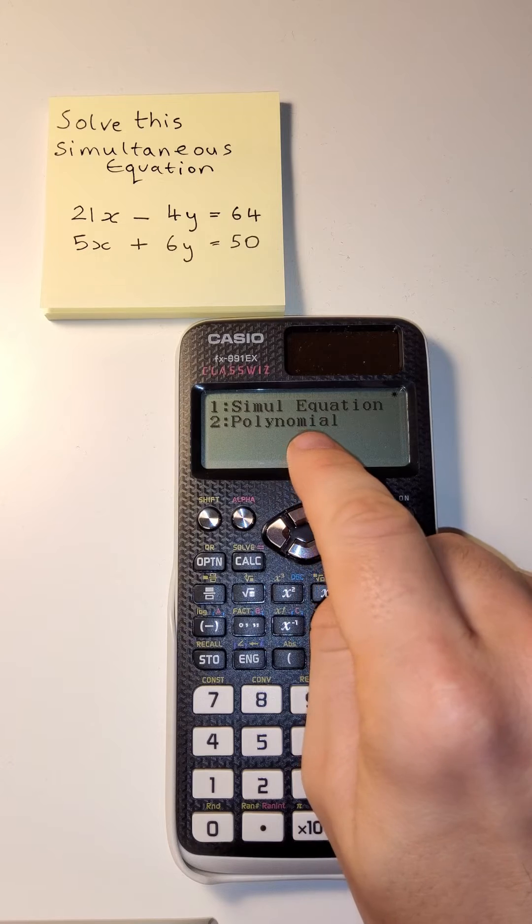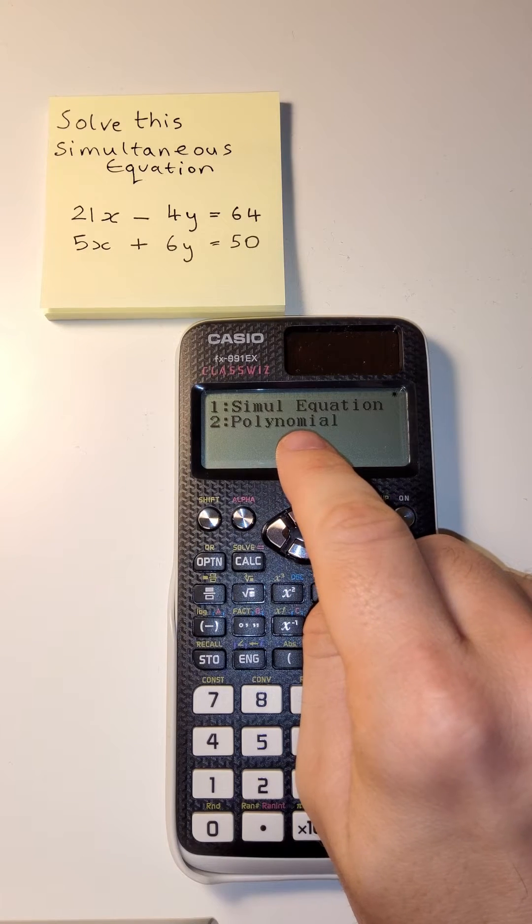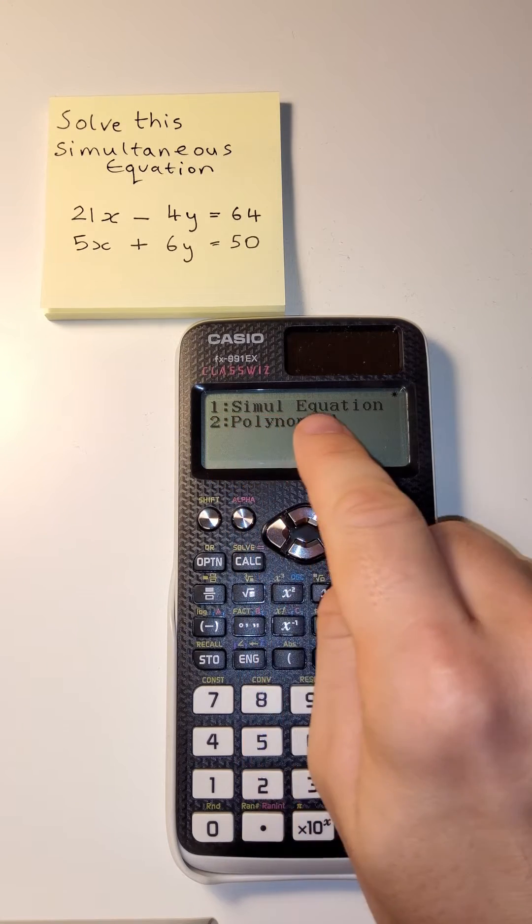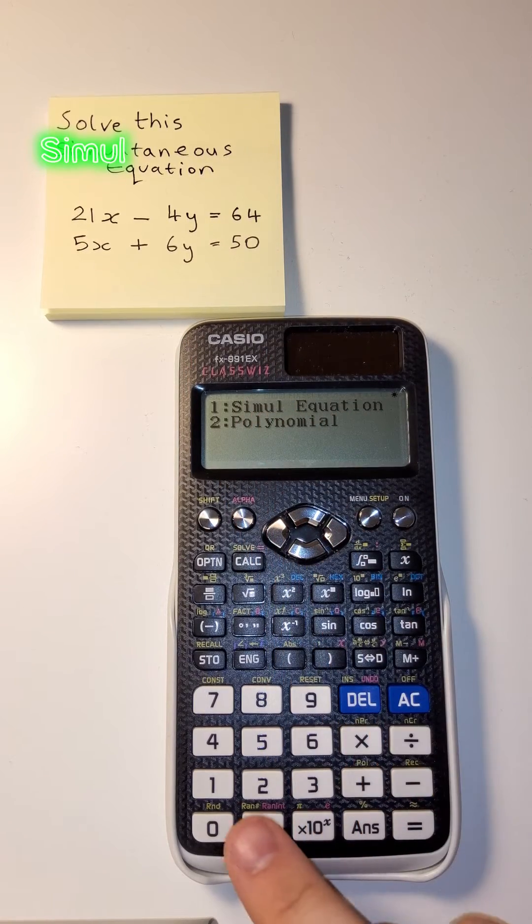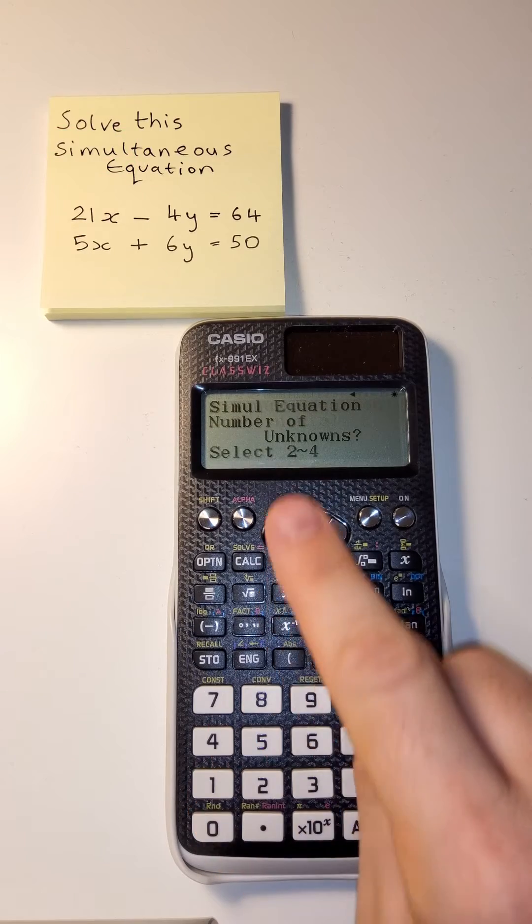The polynomial is for solving polynomials, things like quadratics and cubics. The simultaneous equation is what we want today. That's what simul stands for. And we're going to press 1 which corresponds to the top menu system.